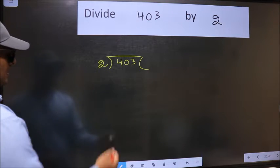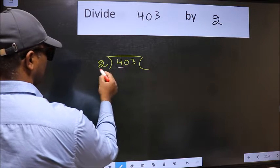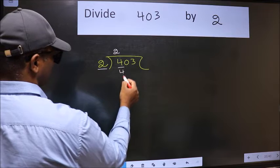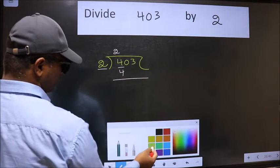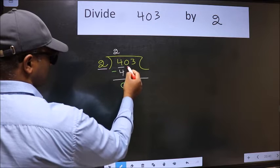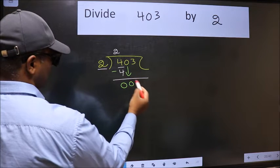Next, here we have 4 and here 2. When do we get 4 in the 2 table? 2 times 2 is 4. Now we should subtract. We get 0. After this, bring down the beside number, so 0 down.